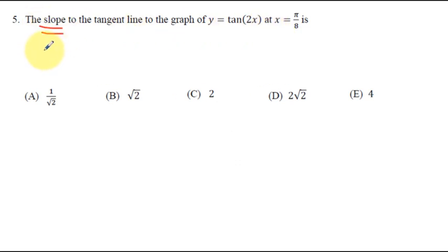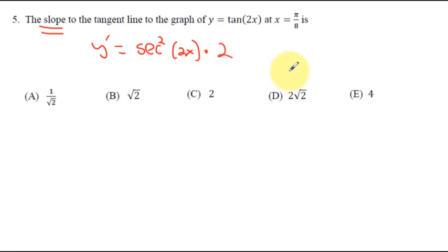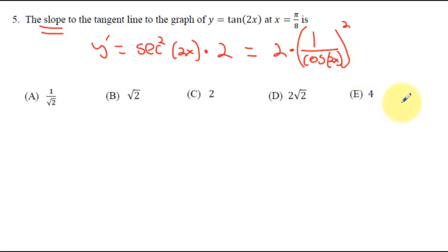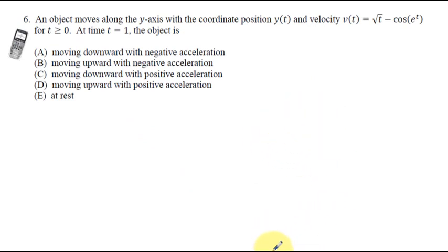Number 5: find the slope of the tangent line to y = tan(2x). Slope means derivative, so let's find y prime. The derivative of tangent is secant squared of 2x, times the derivative of the inside, which is 2. Secant is the same as 1 over cosine, so rewrite it as 2 times 1 over cosine(2x), squared. Then plug in pi over 8: 2 times pi over 8 gives pi over 4. Find the cosine of pi over 4, take its reciprocal, square it, and multiply by 2.